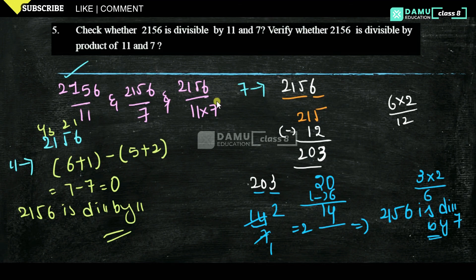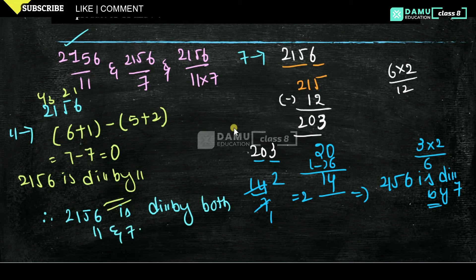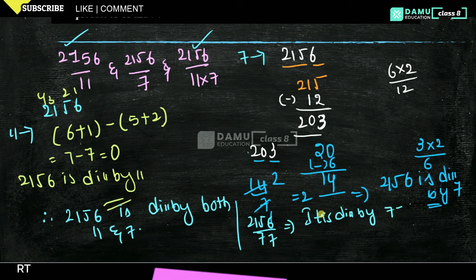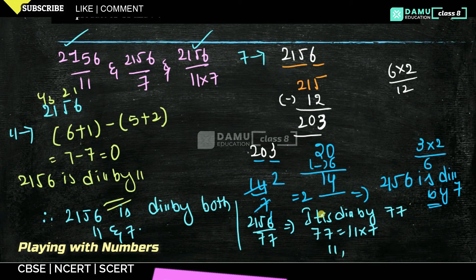We have observed that 2156 is divisible by both 11 and 7. Therefore, 2156 is divisible by 11 into 7, that is 77. Any number divisible by the product of its factors is also divisible by those factors individually. So 11 and 7 are factors of 77, and 2156 is divisible by 77.